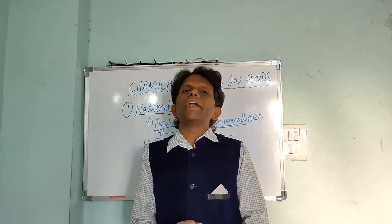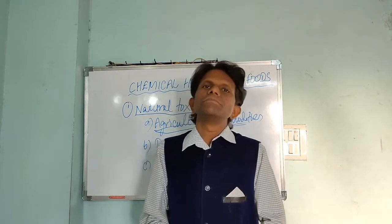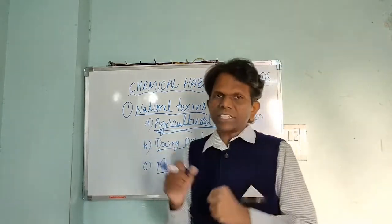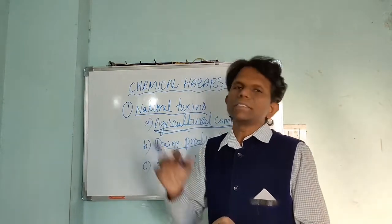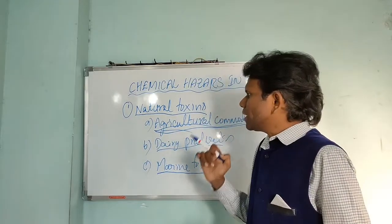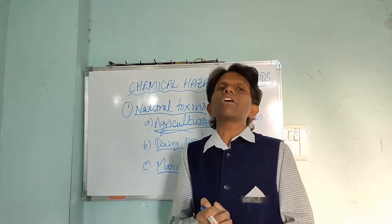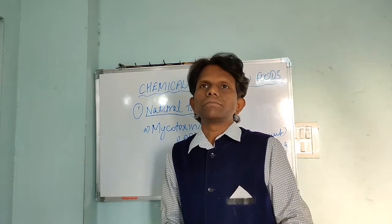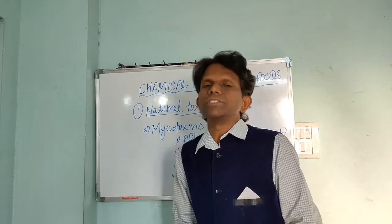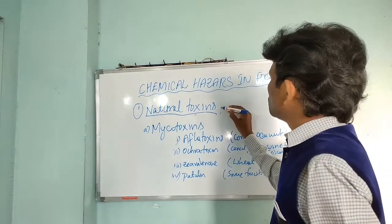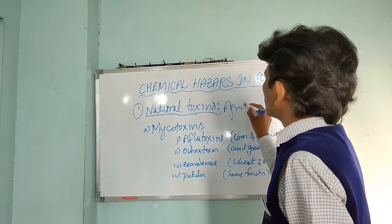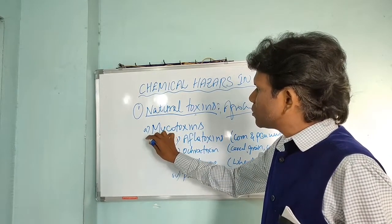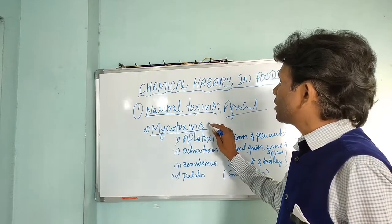Cereals, grains, peanuts, and corn are affected. Aspergillus fungi grow on certain kinds of corn and peanuts, producing toxins called Aflatoxins. Mycotoxins are the best example of natural toxins in agricultural commodities.